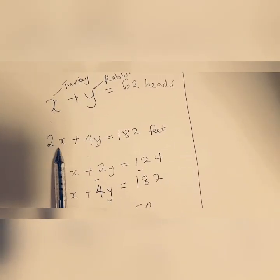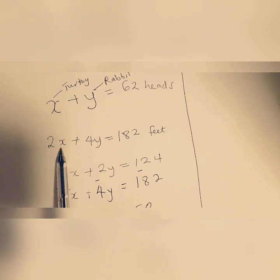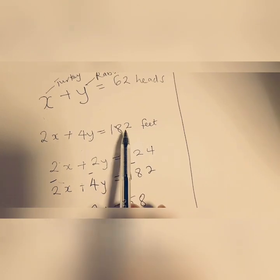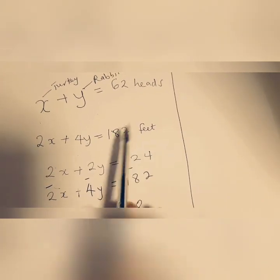For the turkey we know it would have 2 feet and for the rabbit it would have 4 feet, so altogether we are having 182 feet for both.